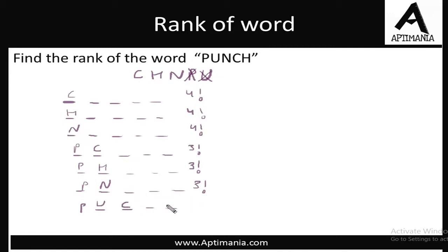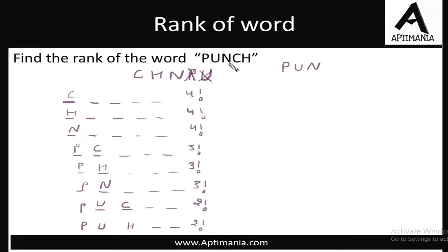With P-U fixed, C comes next at third position — not required, so 2 factorial words. Then H — also not required, 2 positions left, 2 factorial words. Then N comes — N was required at the third position. We fix N and cancel it, then restart from C for the fourth position. C was also required — we fix it. Moving to the next letter: H was also required. So we count this as one case. The word is P-U-N-C-H.